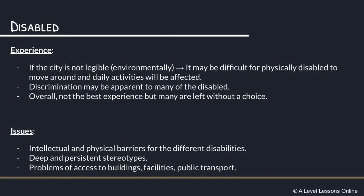The next social group is the disabled. In many cities, they have a very poor experience depending on environmental legibility — meaning whether areas within the city are easily accessible for disabled people. This includes things like ramps, lifts, and elevators that ease the convenience of disabled people both physically and emotionally. Because many of these are missing, the experience is poor. Discrimination also occurs, with some people looking down on disabled individuals. Unlike other groups, they are often left without a choice.